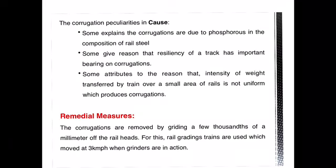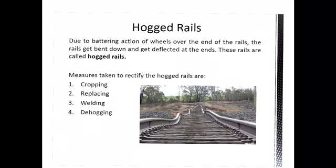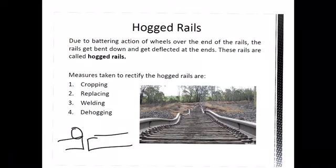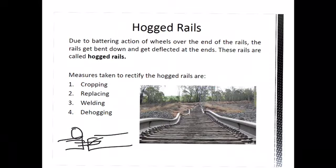The next defect is hogging of rails. Hogging can be seen at the joints — whenever there is a battering action of the wheels over the ends of the rails, those ends get battered, bend down, and deflect at the ends. Such rails are called hog rails. Hogging occurs because of loose packing under the joints and because of loose fish plates and fish bolts. This defect causes a rough riding surface on the railway section.